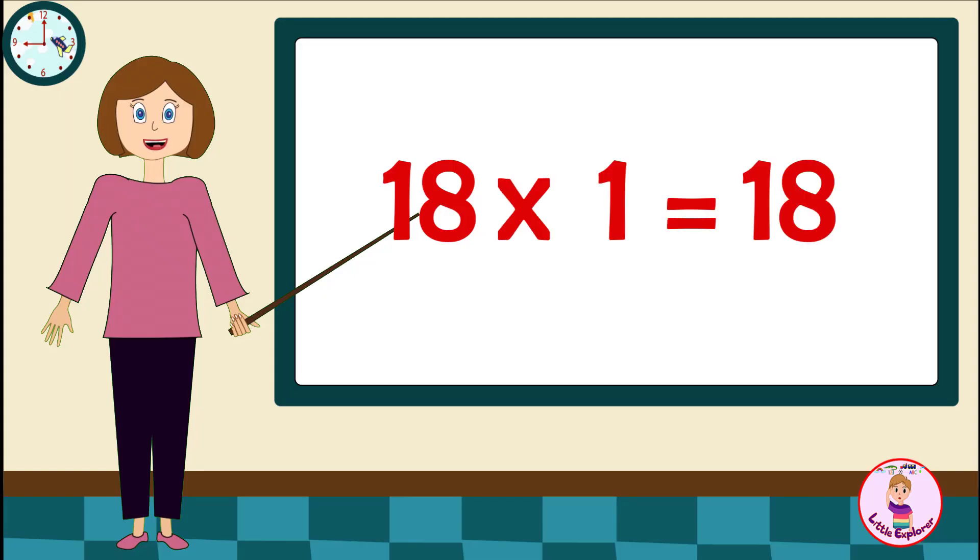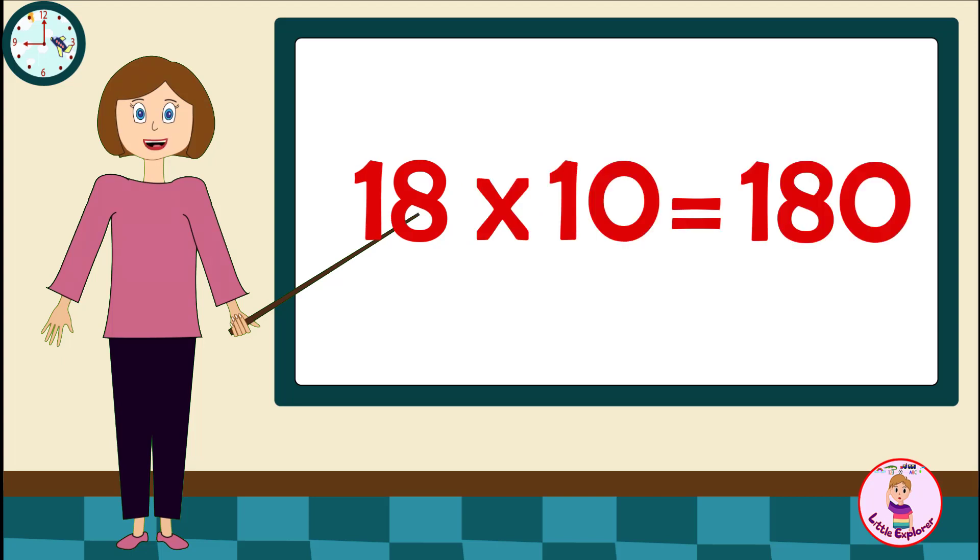18 ones are 18, 18 twos are 36, 18 threes are 54, 18 fours are 72, 18 fives are 90, 18 sixes are 108, 18 sevens are 126, 18 eights are 144, 18 nines are 162, 18 tens are 180.